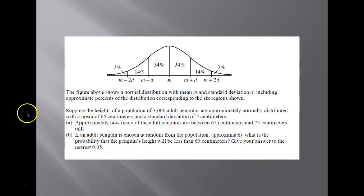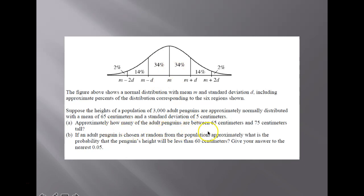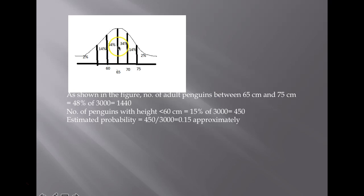Coming to the fourth question. The figure shows a normal distribution with mean M and standard deviation D, with approximate proportions: 34%, 34%, 14%, 14%, 2%, 2%. The heights of 3,000 adult penguins are approximately normally distributed with a mean of 65 cm and a standard deviation of 5 cm. How many adult penguins are between 65 cm and 75 cm tall? Since 75 is two standard deviations above the mean, that covers 34% plus 14% equals 48% of 3,000, giving 1,440 penguins.